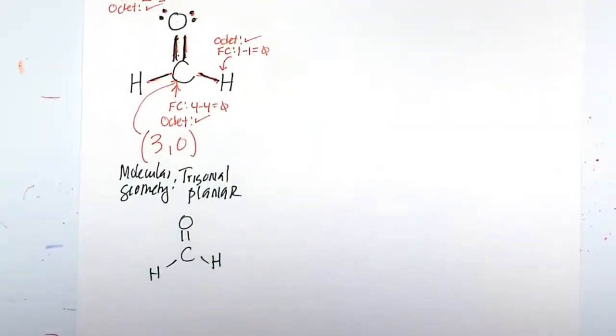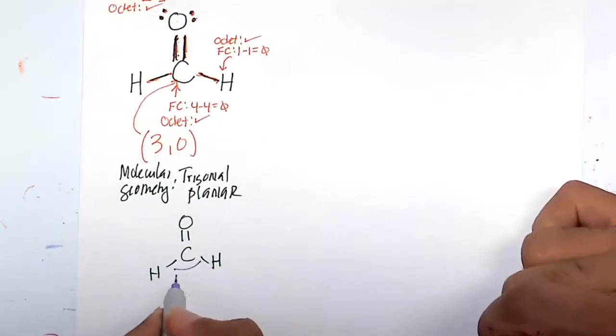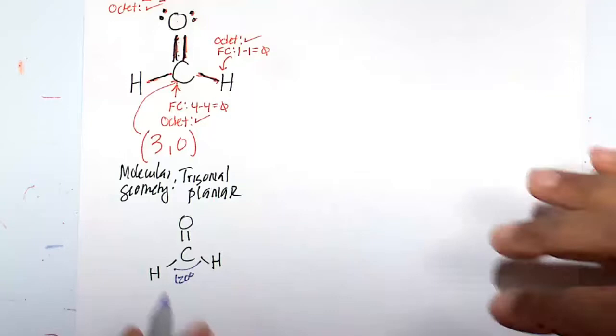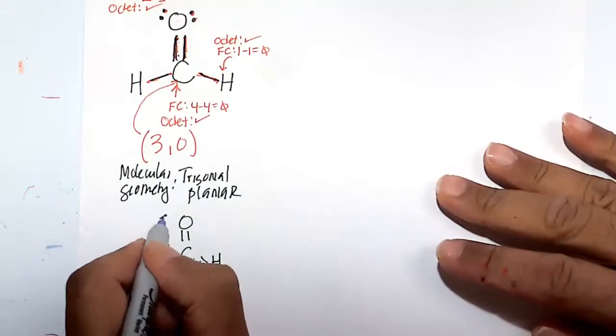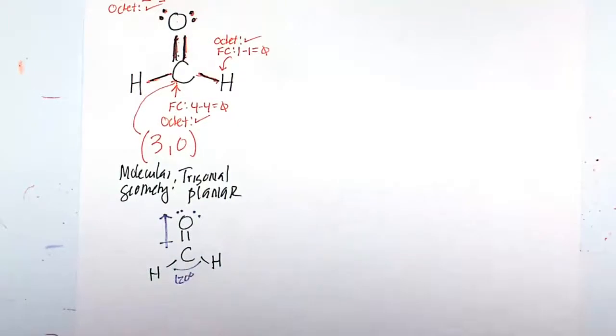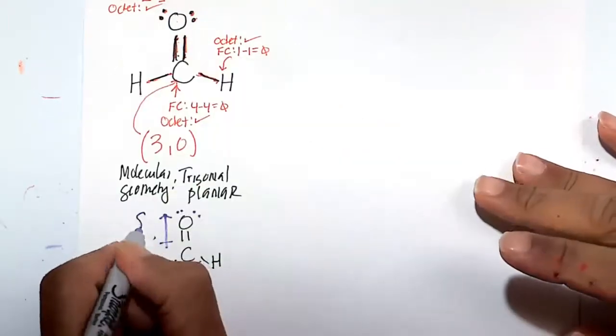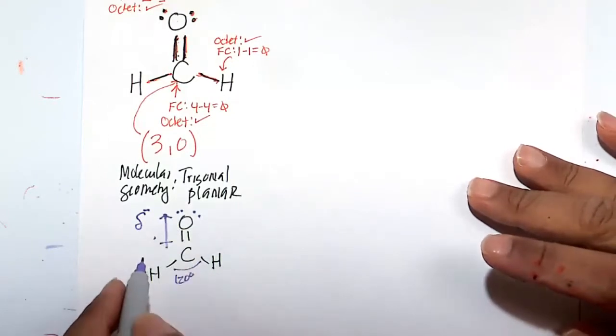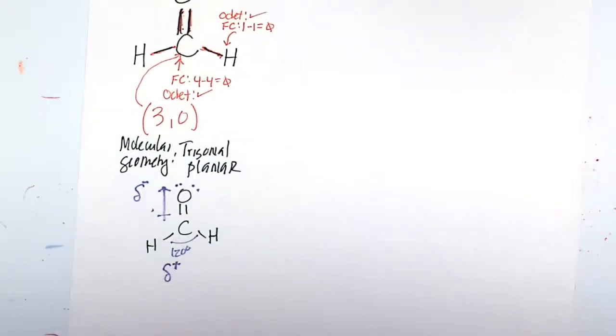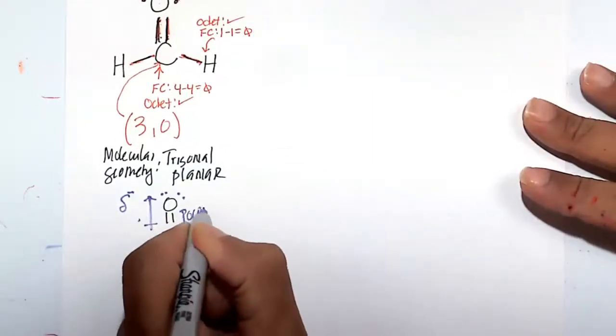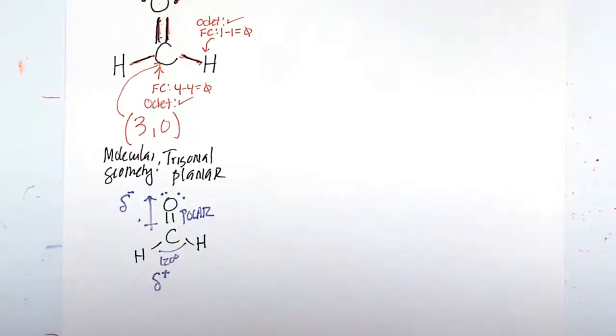Very perfect angle of 120 degrees. Again, there's no lone pairs on the central atom. You get those very nice bond angles, very clean bond angles, I should say. This molecule is polar. That oxygen is sufficiently electronegative enough so that it pulls. So this oxygen end of the formaldehyde molecule will have a partial negative charge, leaving behind a partial positive charge on the carbon.